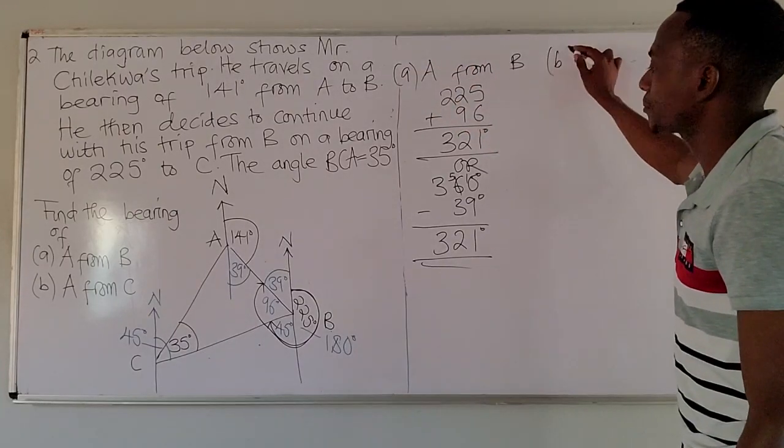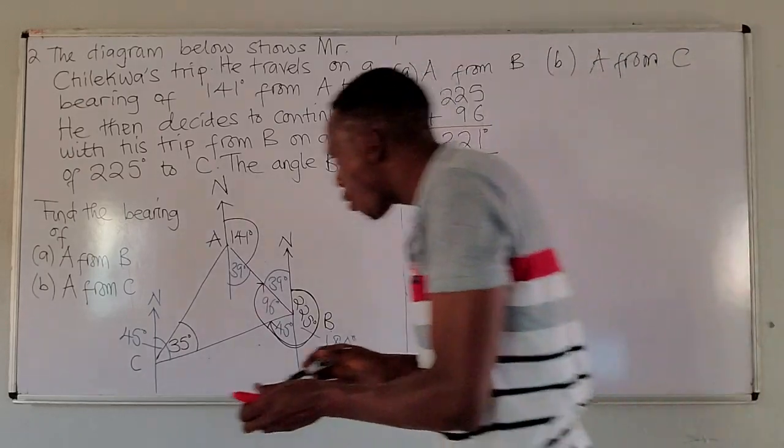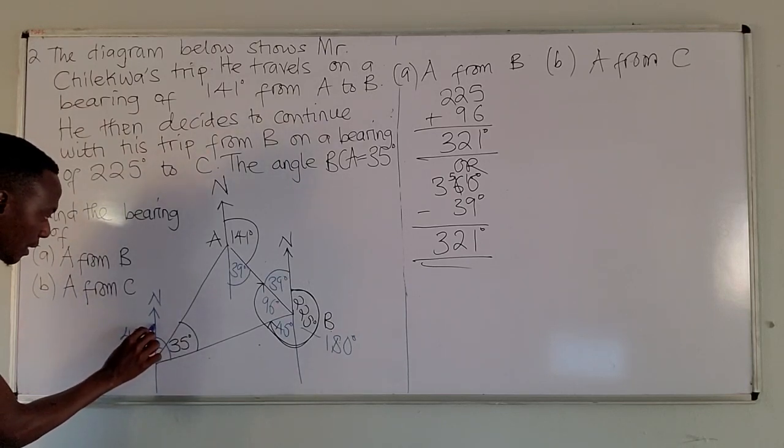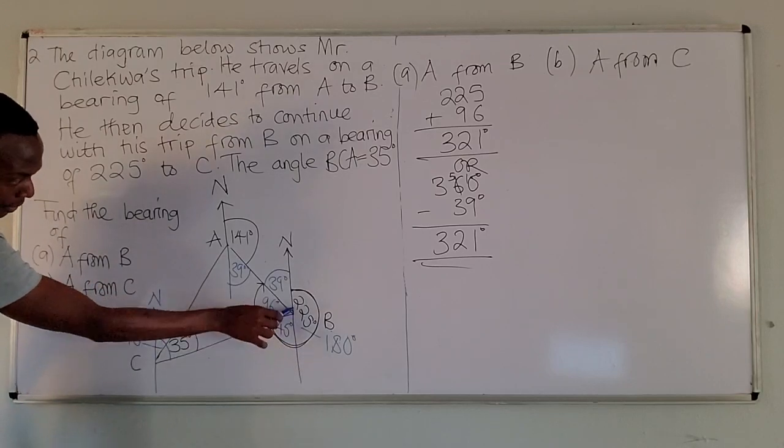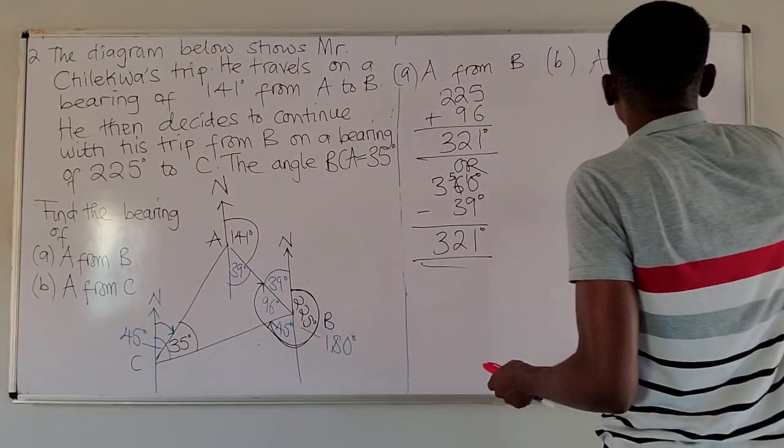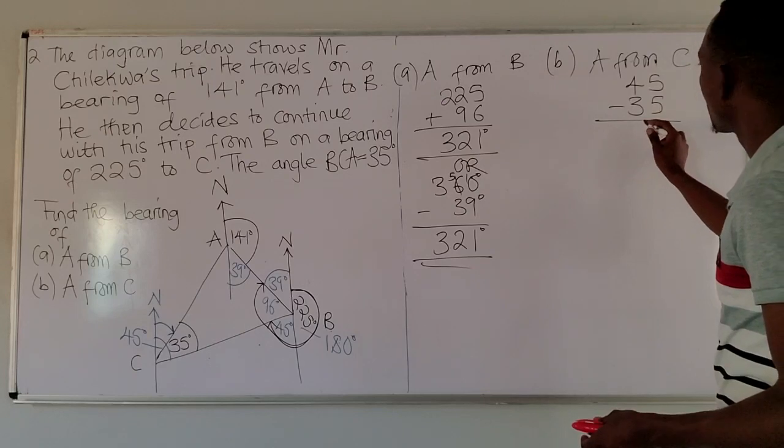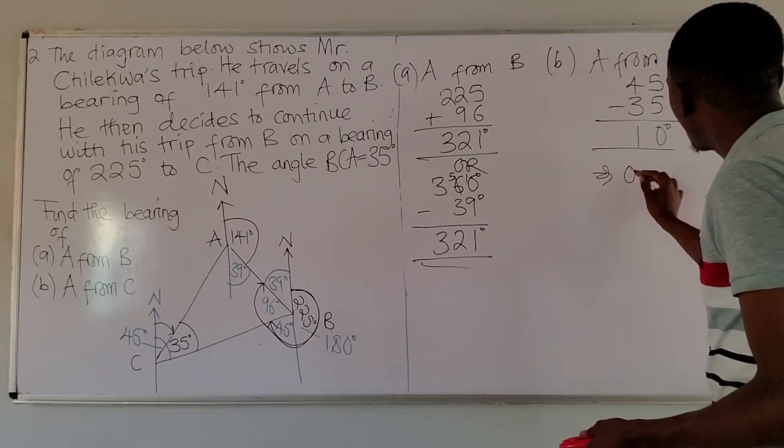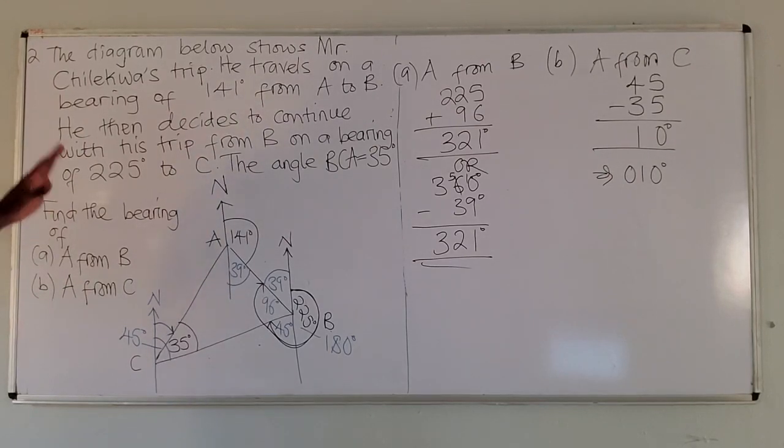The bearing of A from C. Again we go from C. So I need to move from the north of C, moving clockwise, until I hit the line joining A and C. We have just discovered using Z angles, the whole of this angle is 45 degrees. So the only thing we have to do here is subtract 35 from 45, which gives us 010 degrees. According to bearing, this number is 010 degrees. This is how you are supposed to work out bearings.